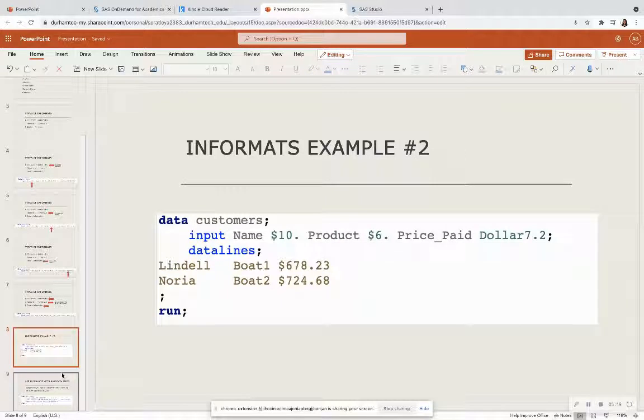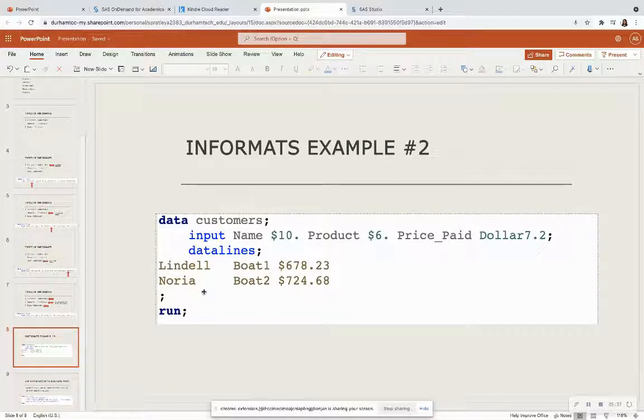So this is another example of informats. I'm creating a data set called customers, and I'm inputting three variables: the name, the products, and the price paid. Notice that in my data line, since I'm typing in raw data for this example, I have the name with length of 10, which is Lindell and Noriah. I have the product, which is also a character with length of six, which is boat one and boat two.